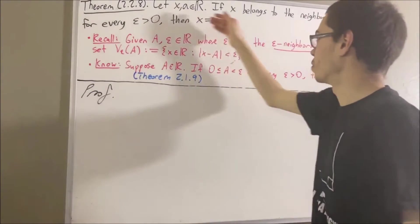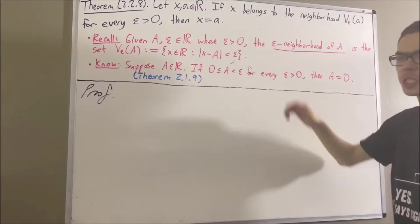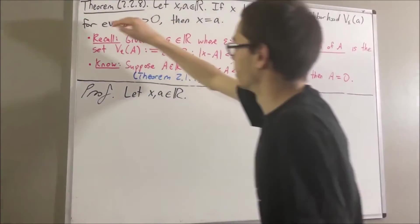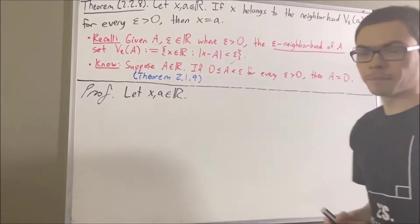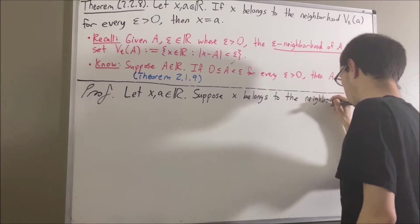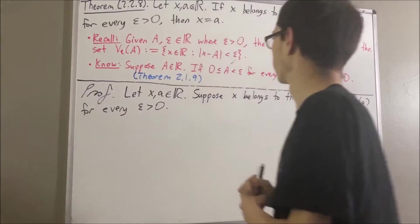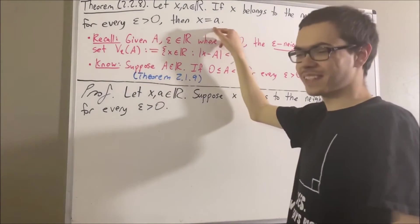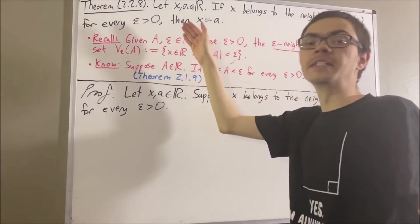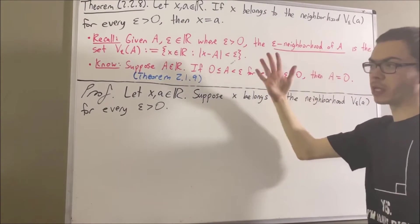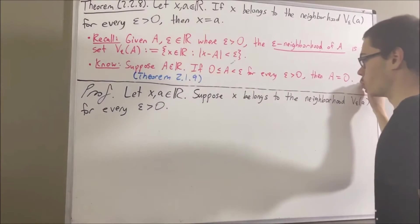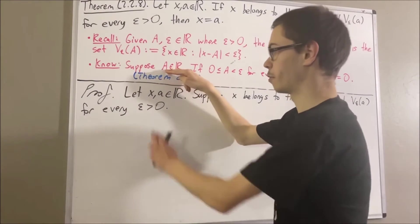Now let's get into proving the theorem. To start out our proof, let's give ourselves two arbitrary real numbers x and a. Our whole goal is to prove that if x belongs to the epsilon neighborhood of a for every epsilon greater than zero, then x is equal to a. We're going to show this by proving that the absolute value of x minus a is equal to zero, by applying Theorem 2.1.9, taking capital A to be the absolute value of x minus a.